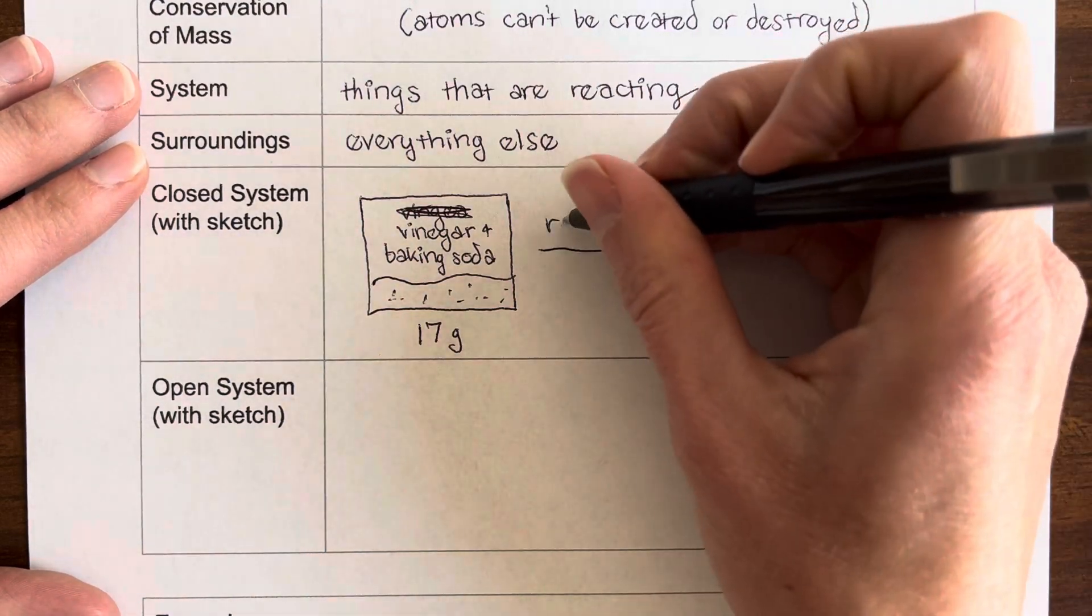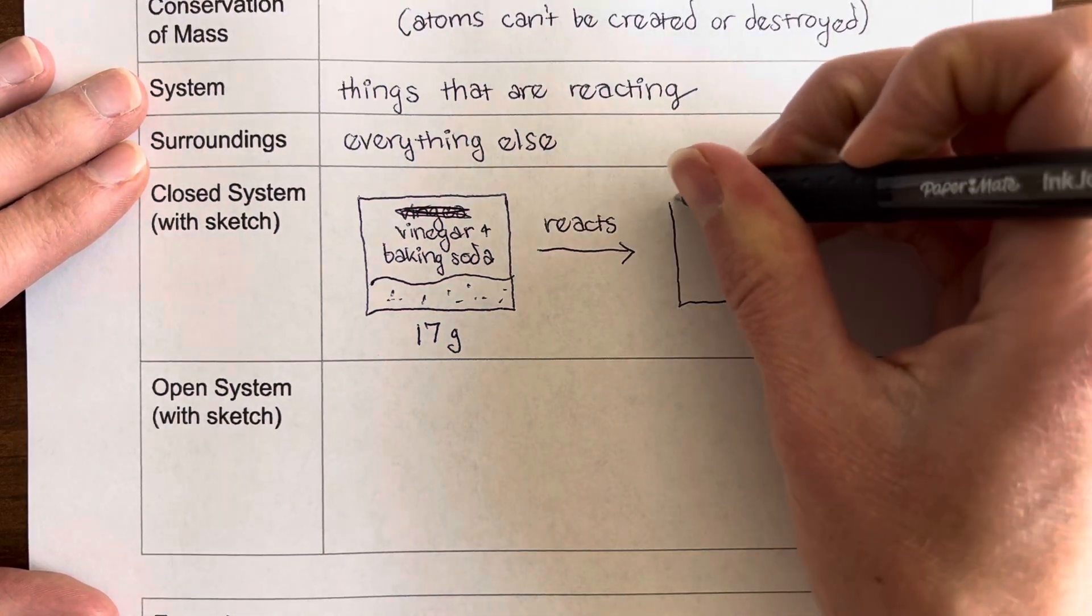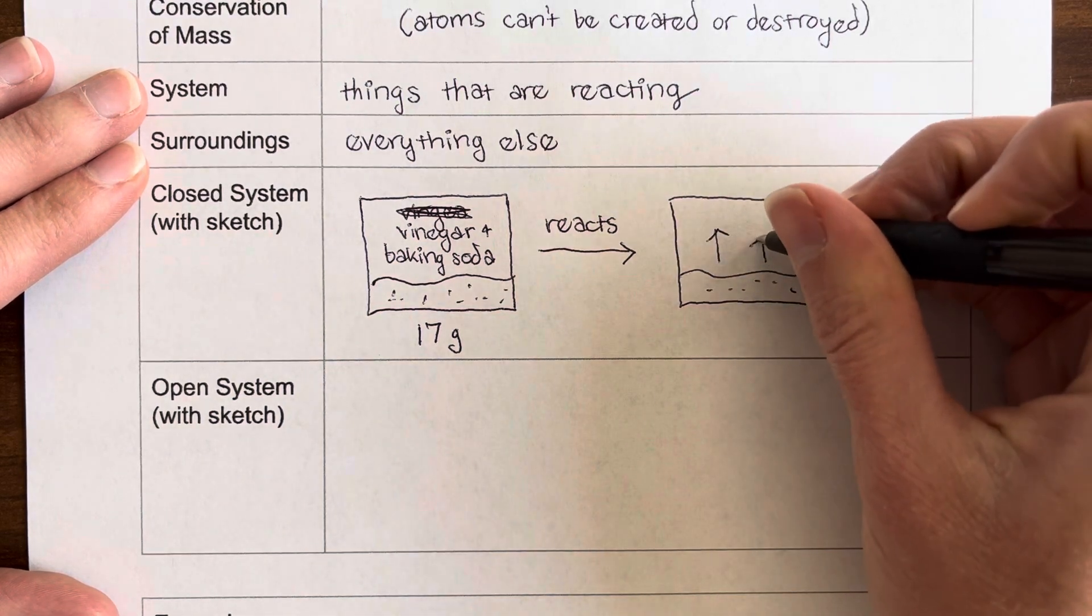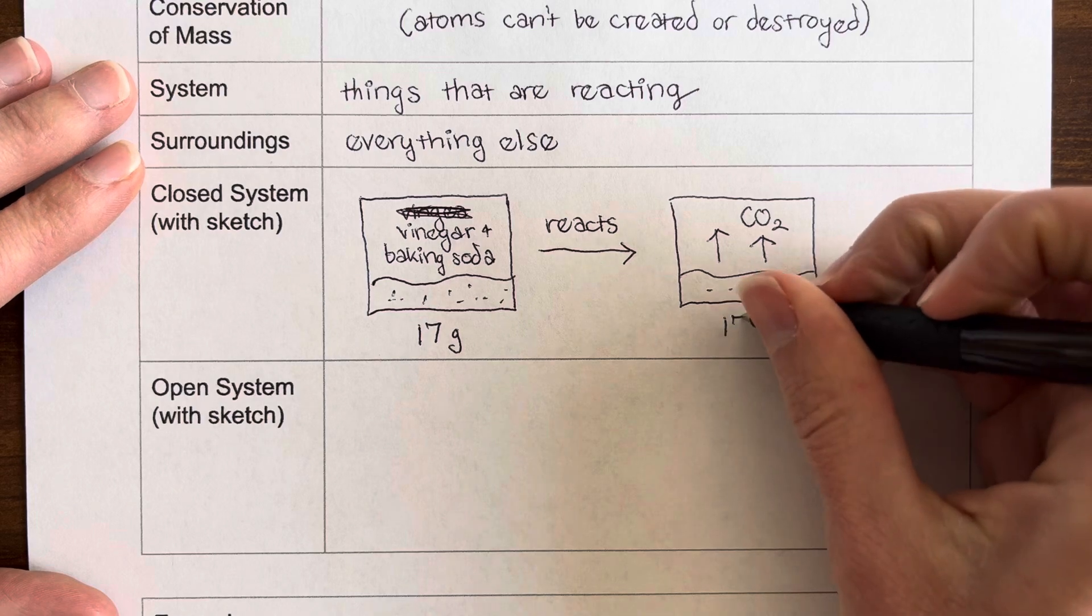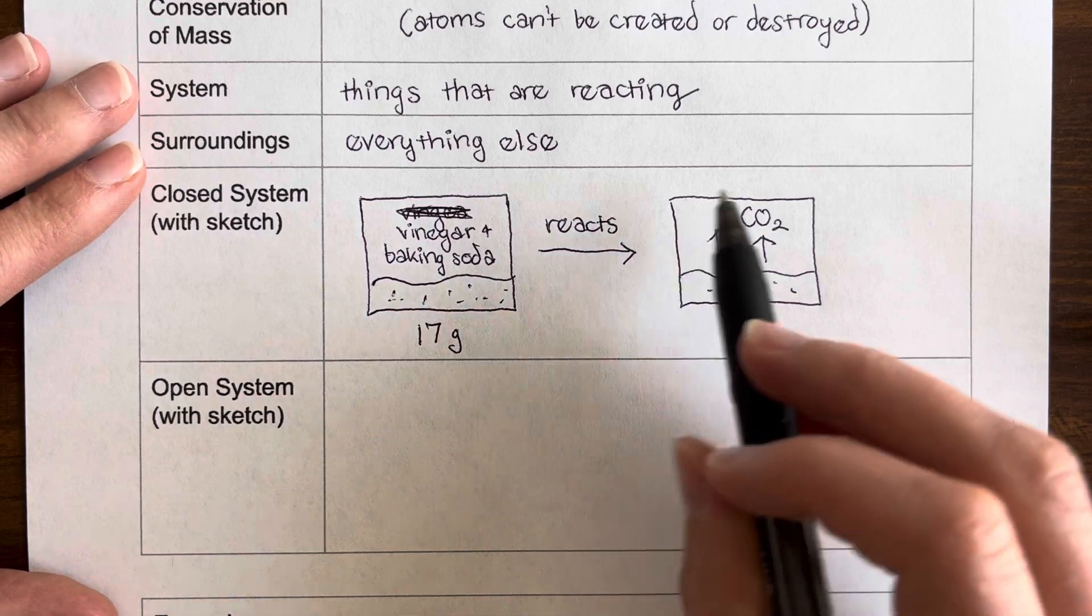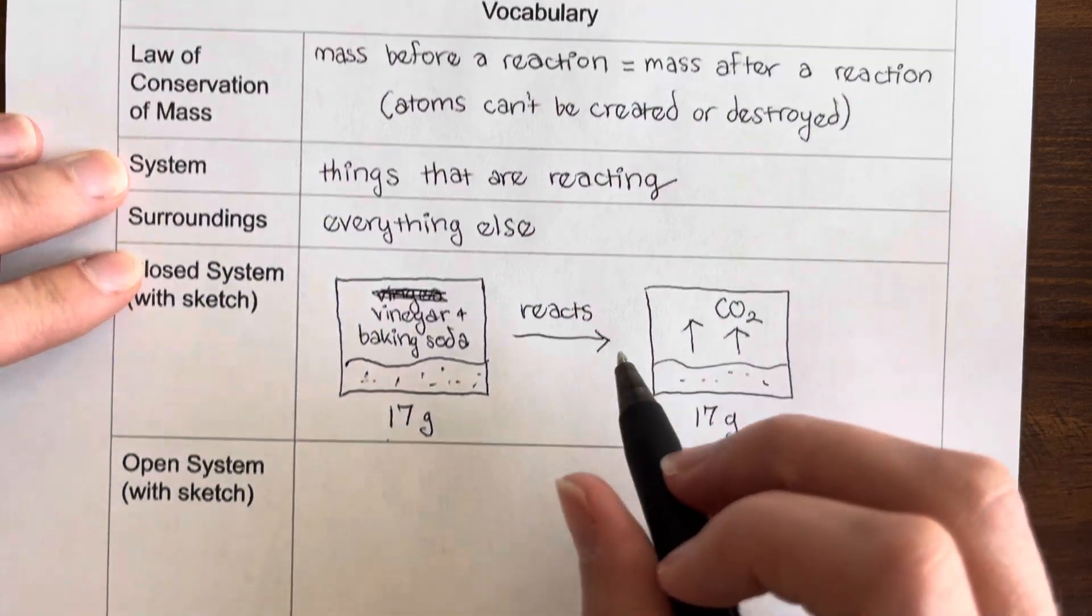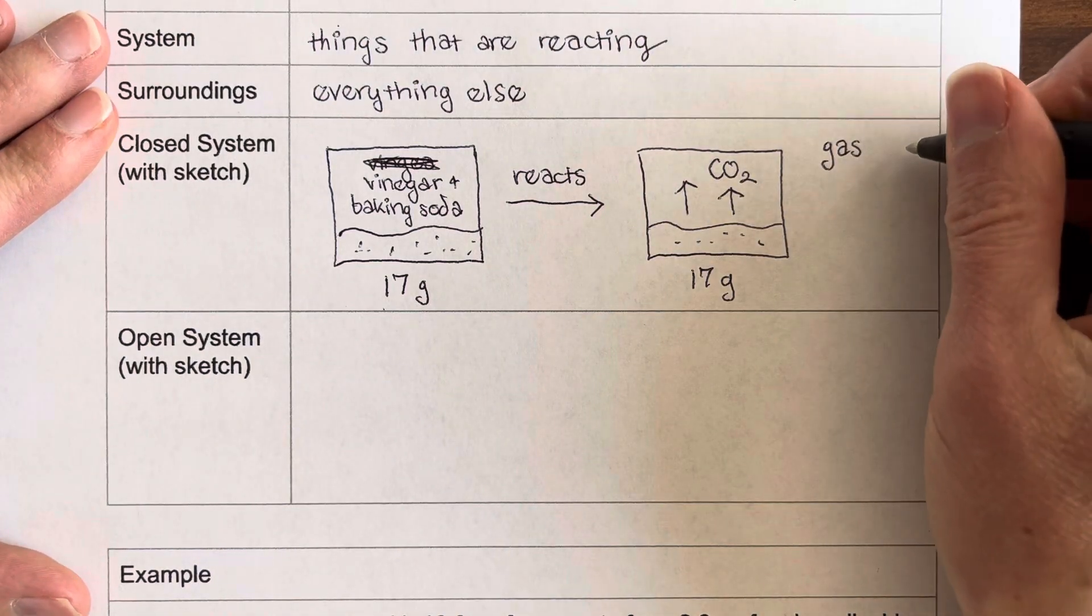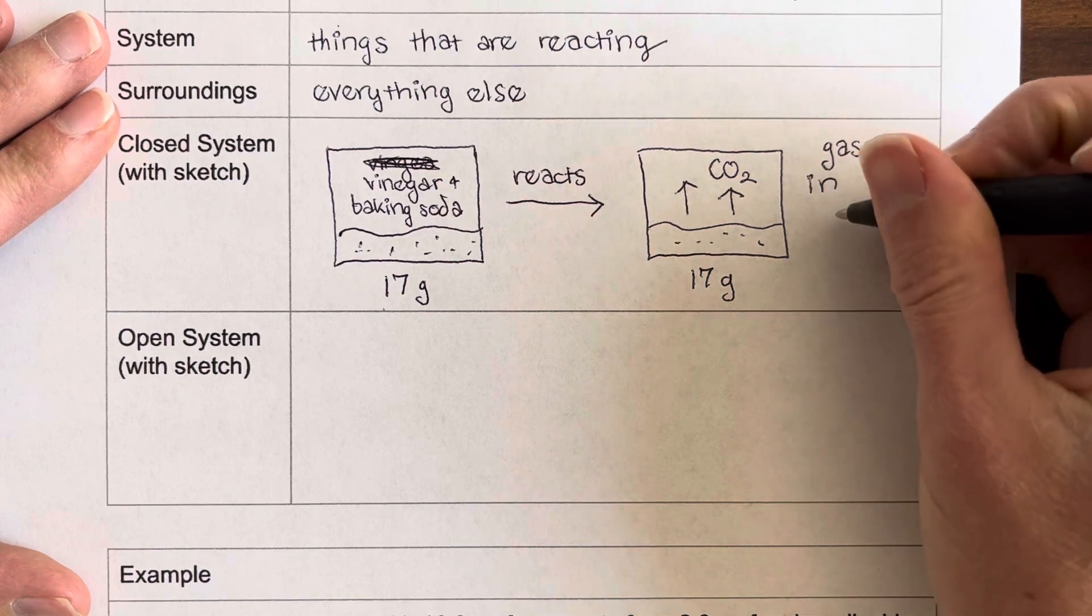And then let's say we have the reaction. And afterward, the reaction has happened. Some CO2, some carbon dioxide has been released. We get the mass again, and it's still 17 grams. Even though carbon dioxide was released, it stayed in the container because the container is a closed system. And so the mass is the same. So we can really easily see this is following the law of conservation of mass because the gas stays in the container.